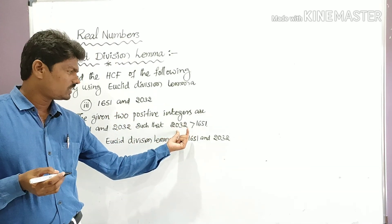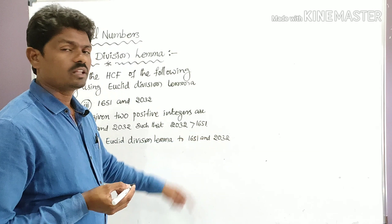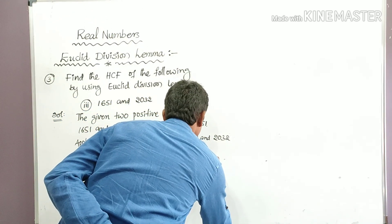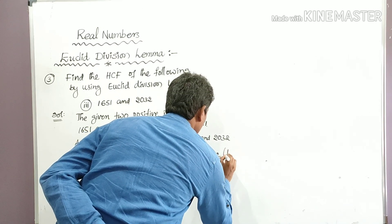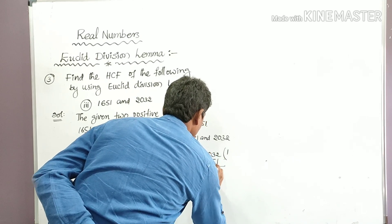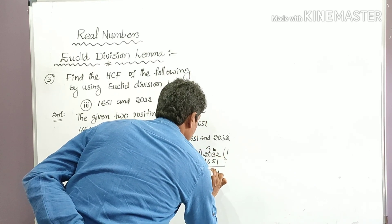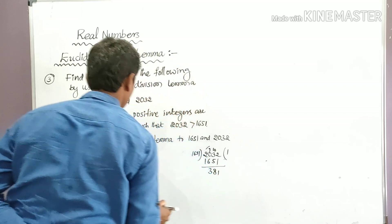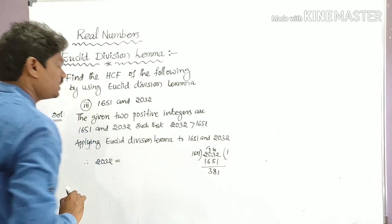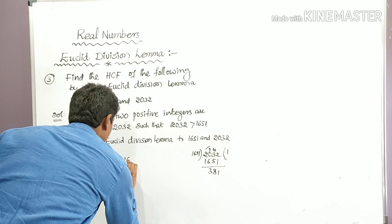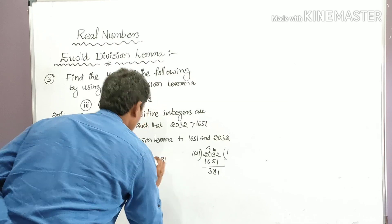We divide 2032 by 1651. The computation gives: 1651 into 1 is 1651; subtracting from 2032 gives remainder 381. Therefore we can write: 2032 = 1651 × 1 + 381.